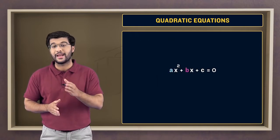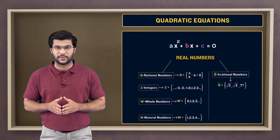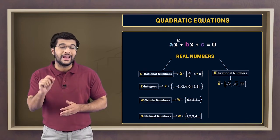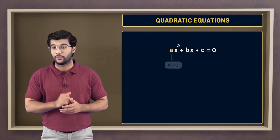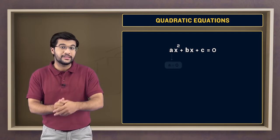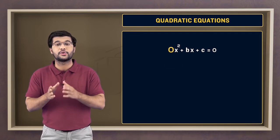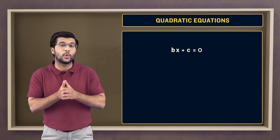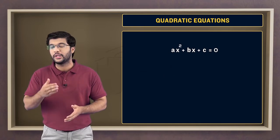While a, b, and c can be any real numbers, there is an exception for a. It can be any real number but not 0. Because if a is equal to 0, the equation is no longer a second degree equation. And we need a squared term for an equation to be quadratic.